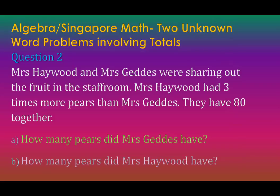Question 2. Mrs Hayward and Mrs Geddes were sharing out the fruit in the staff room. Mrs Hayward had three times more pears than Mrs Geddes. They had 80 pears altogether. Part A: How many pears did Mrs Geddes have? And Part B: How many pears did Mrs Hayward have?